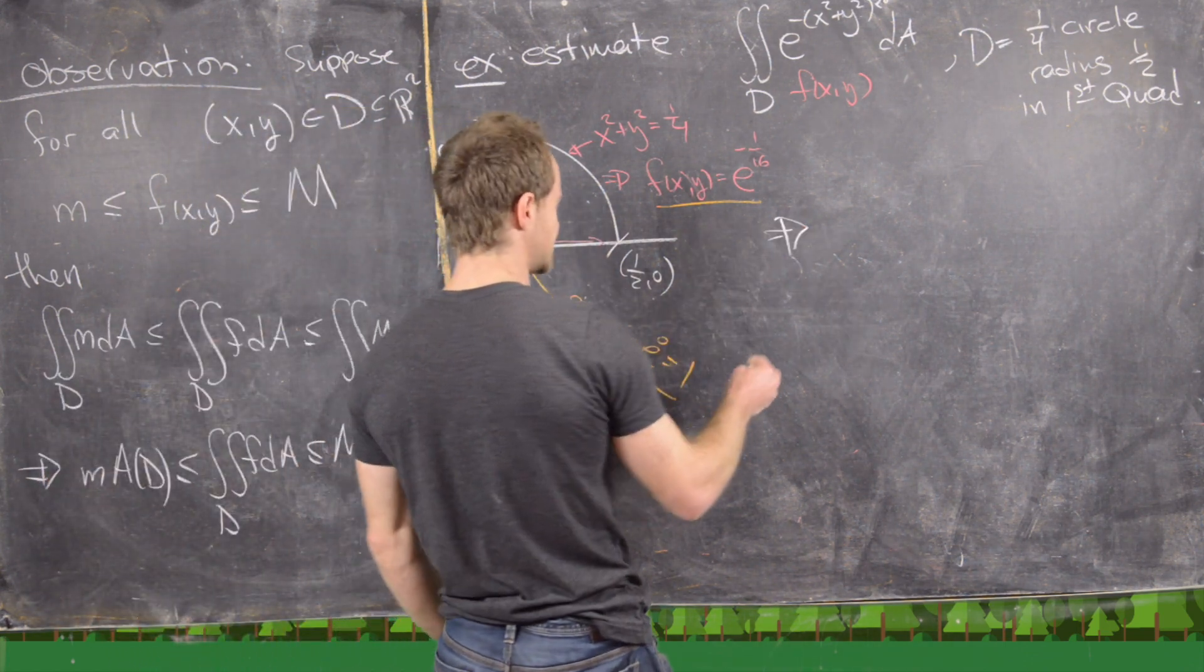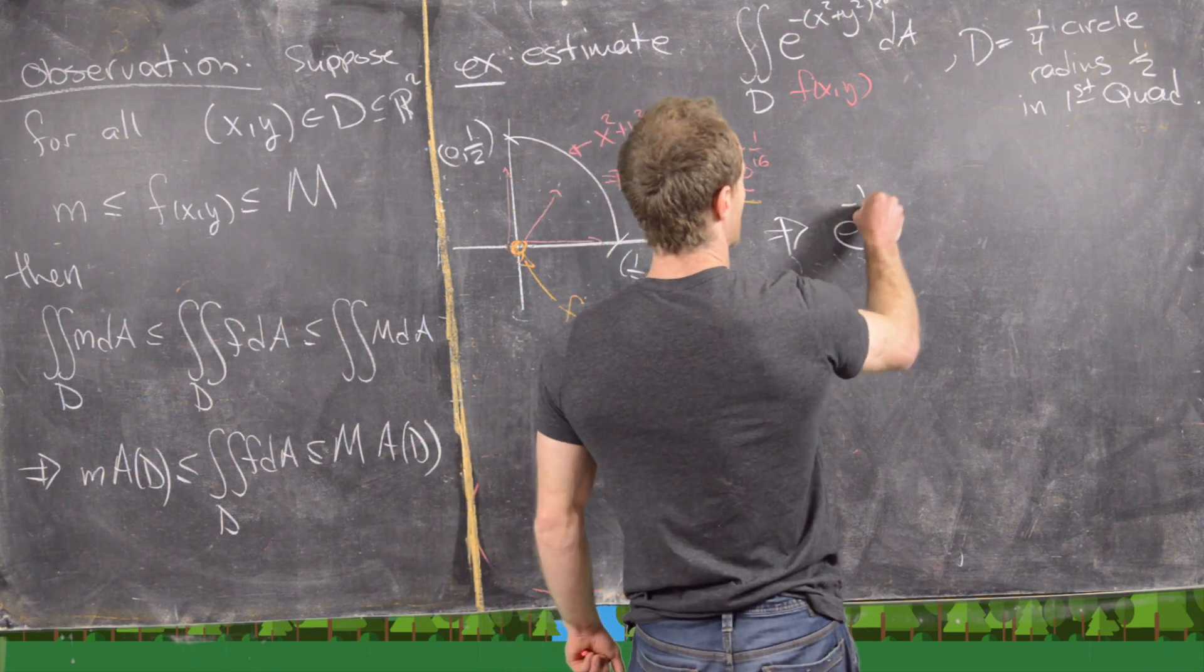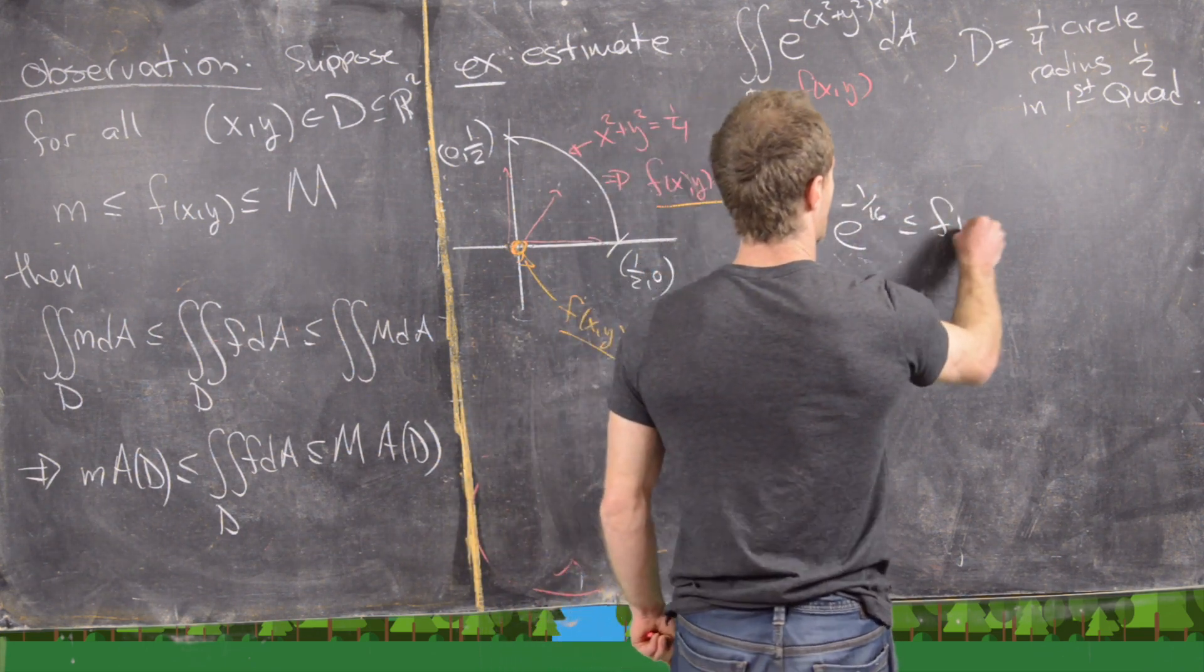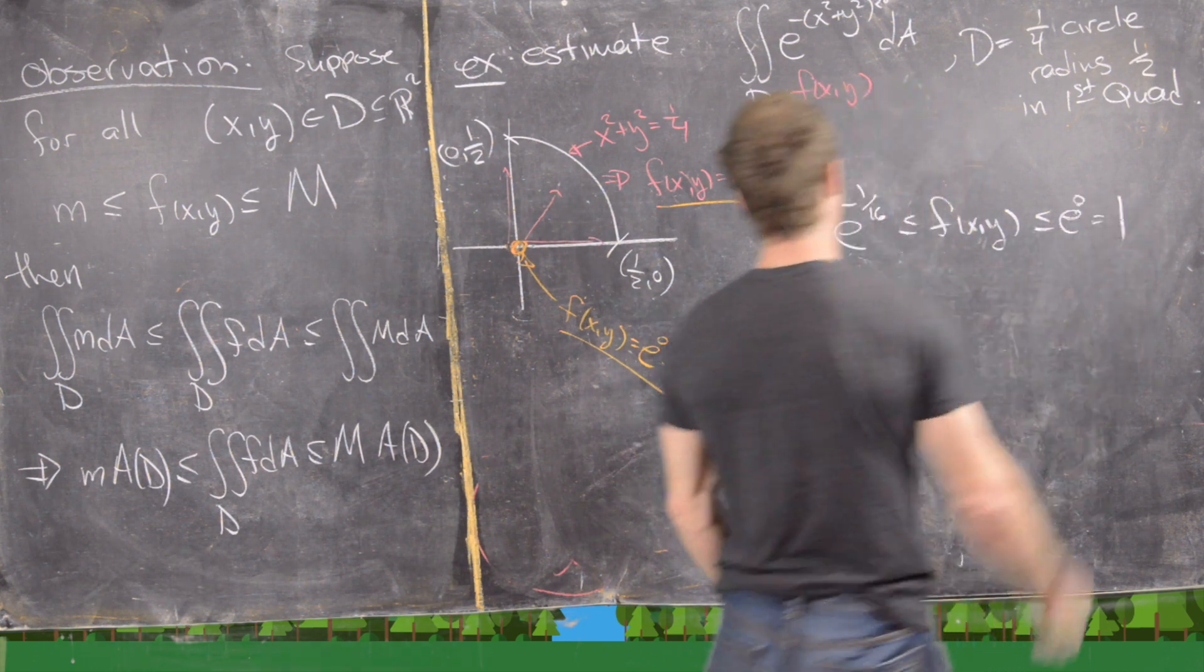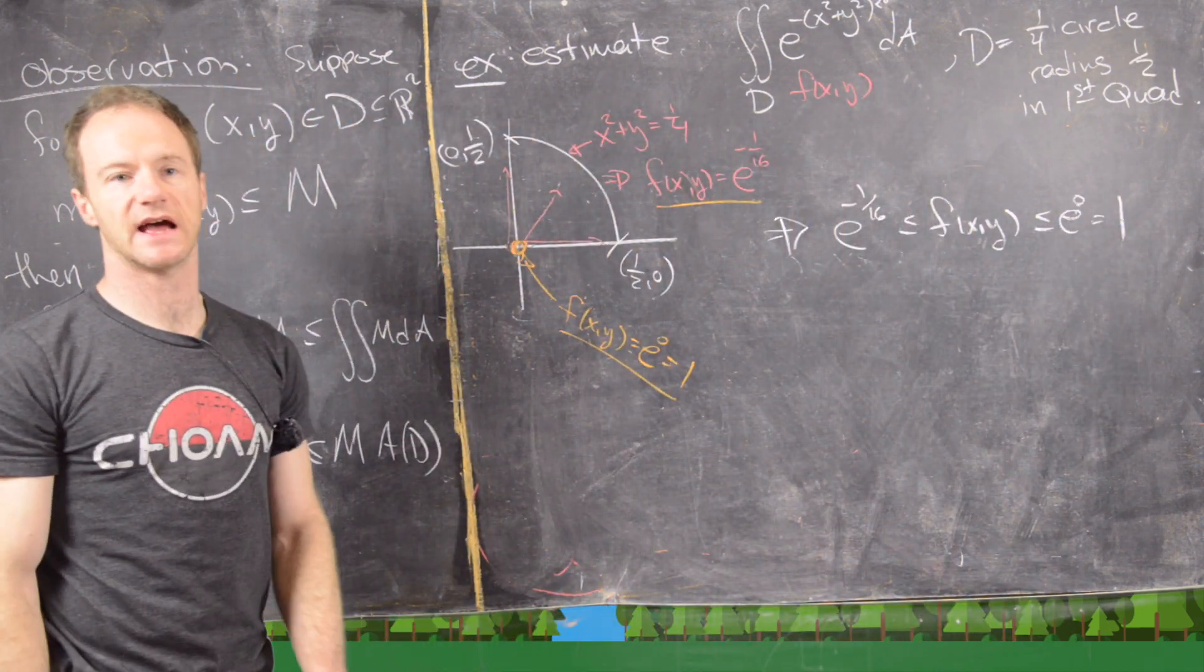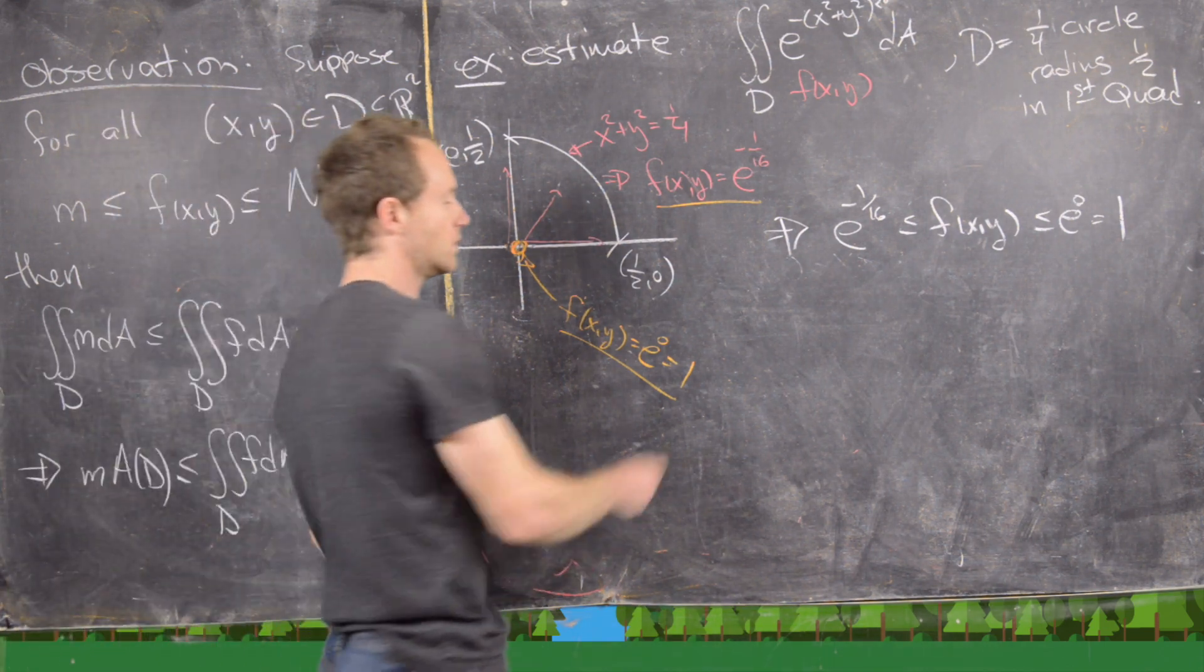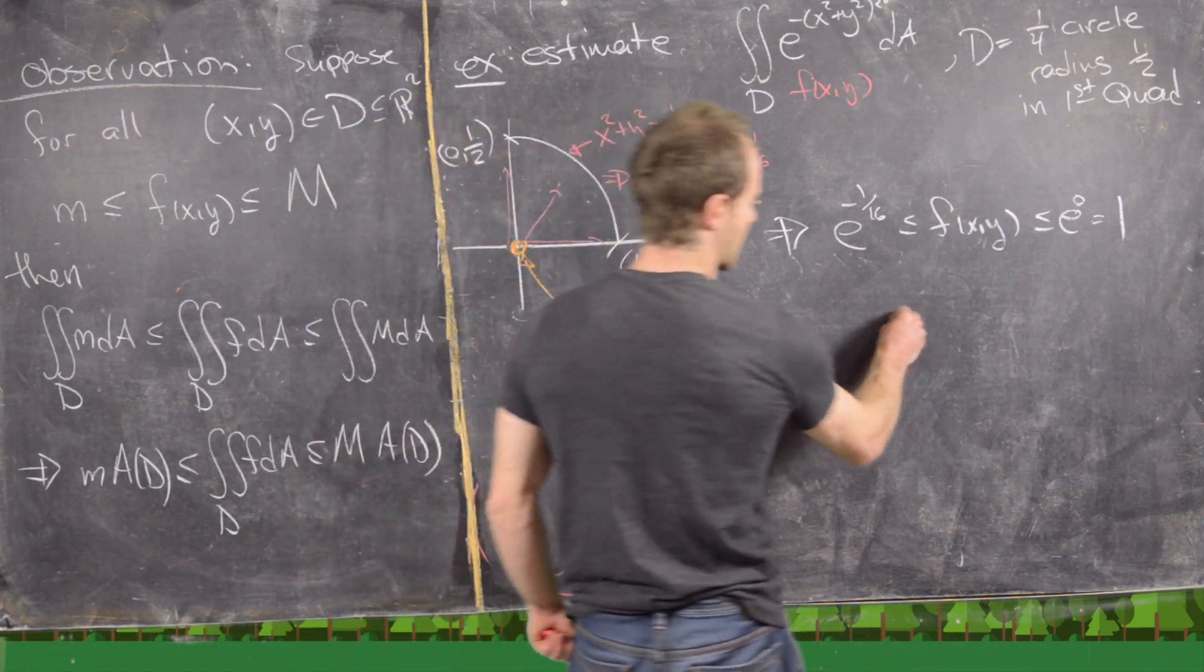But it's pretty easy to see that there we have a maximum and there we have a minimum. So when all is said and done, we have our function f(x,y) is bound between e^(-1/16) and e^0,